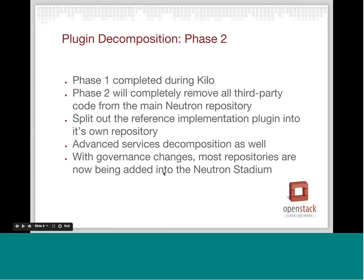I'll quickly run through decomposition phase two. Completed phase one during Kilo, phase two is effectively going to allow all third-party code to be removed from the main Neutron repository — dealing with things like database migrations that were still left in tree and the shim plugin as well. The goal is to split all of that out. The reference implementation will also be split out. The advanced services are starting to decompose some of their back-end drivers. The nice thing about the advanced services was that people proposing new ones saw the benefit of plugin decomposition on the drivers and plugins for the core Neutron resources, so some of the new services things were actually decomposed from the start as well.